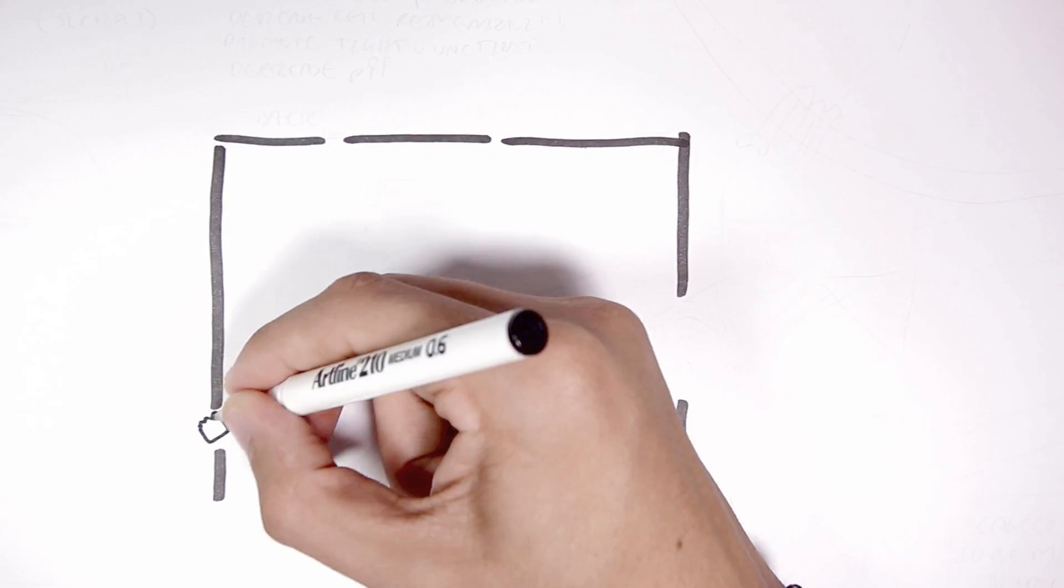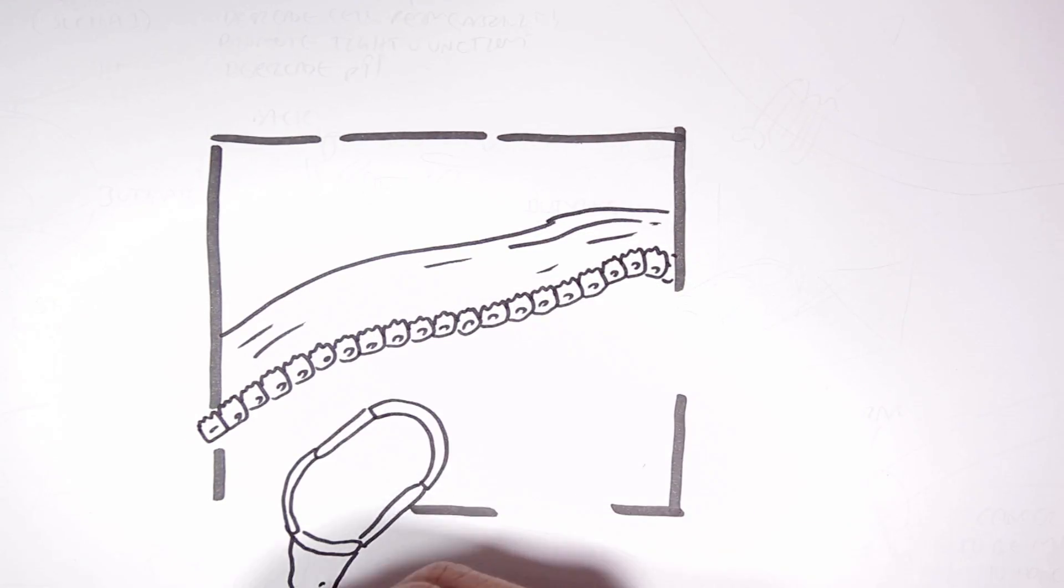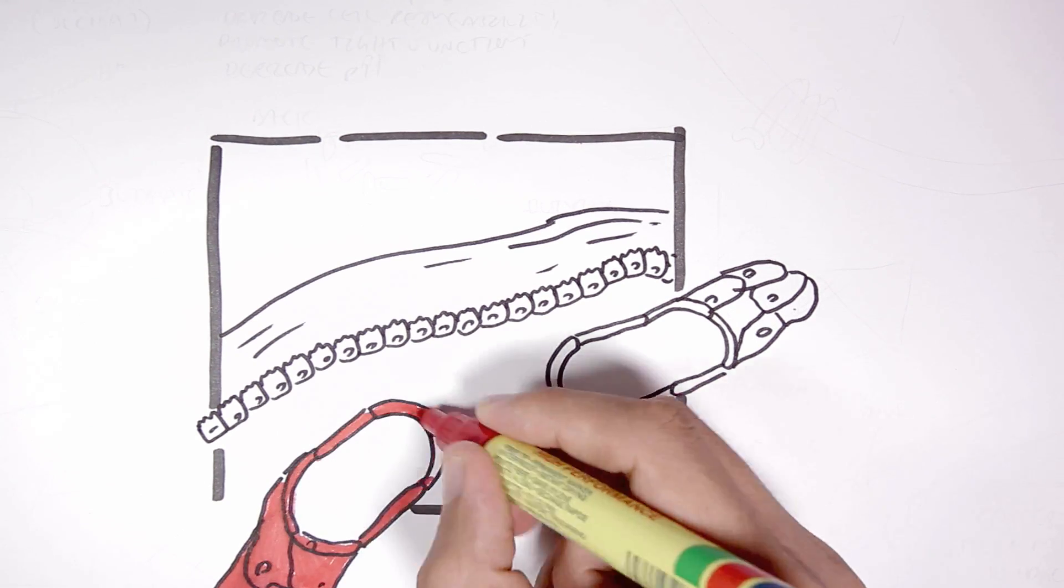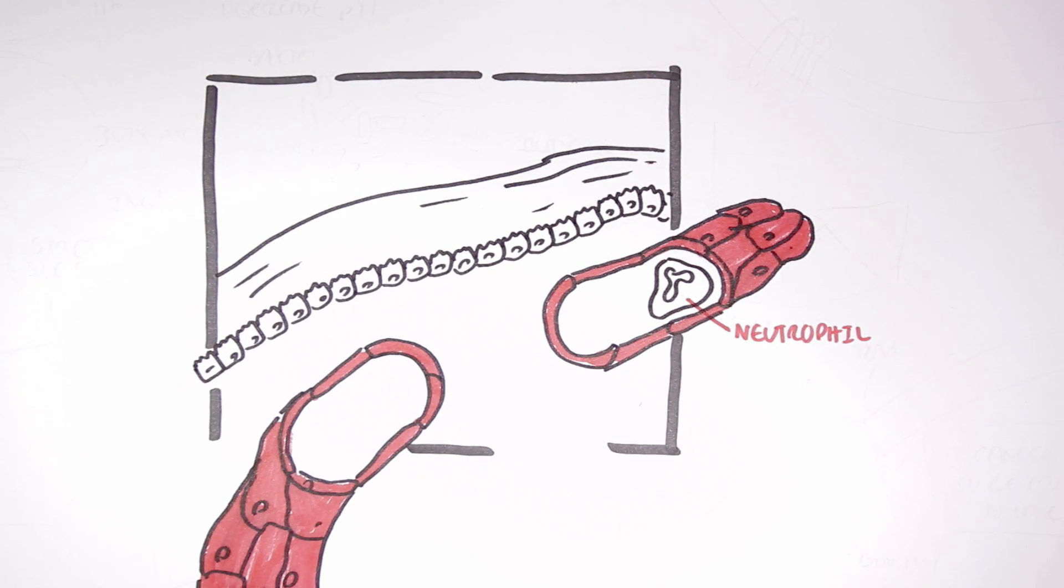So here I'm drawing a section of the colon again with the blood vessel. Within the blood vessel we can find red blood cells and immune cells such as a neutrophil. The neutrophils play a key role in phagocytosis.